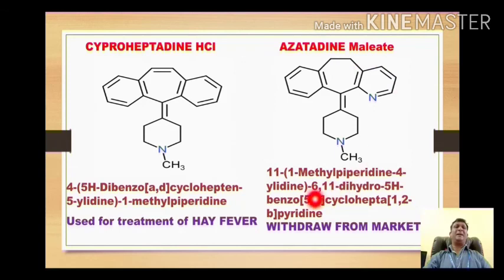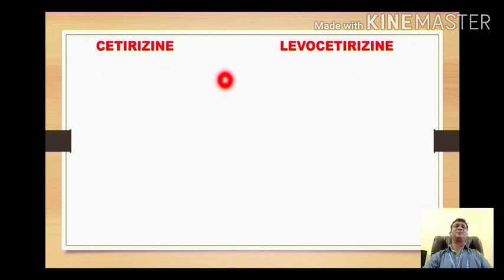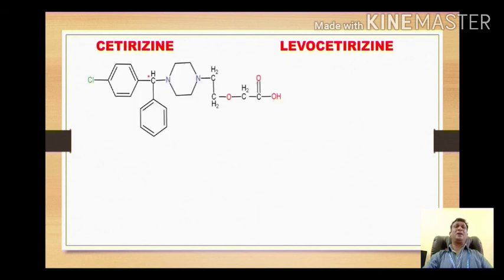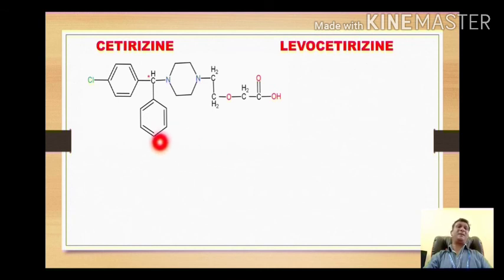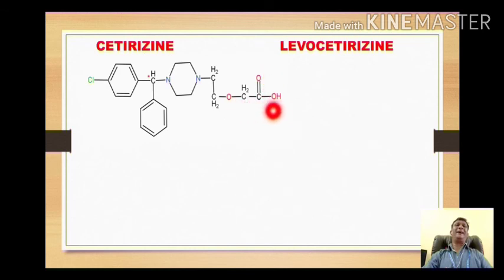Next we move on to the second generation antihistaminic drugs, which are considered non-sedating — meaning they do not produce sedation and drowsiness. The first compound is cetirizine and its isomer levocetirizine. Cetirizine is chemically related with the piperazine class. The chlorophenyl, phenyl methyl, and piperazine with methyl is common, but this portion — CH₂OCH₂COOH, the acetic acid derivative portion — is an extra portion.